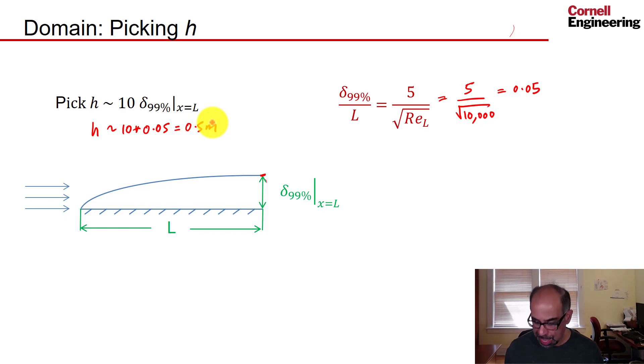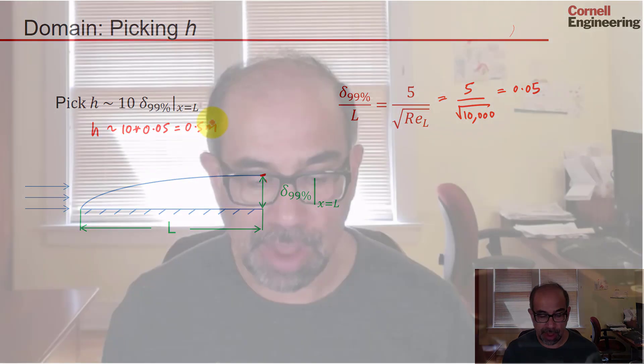So we need to create a rectangle that is of length 1 and height 0.5. So that brings us to the end of the discussion of the mathematical model. Next, let's think about how we solve the mathematical model.